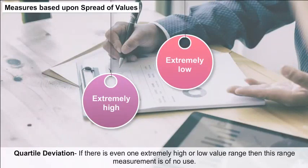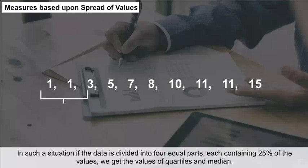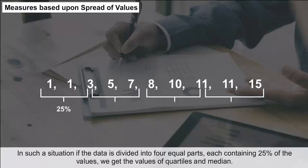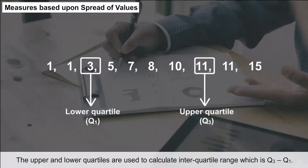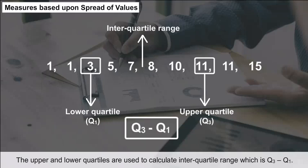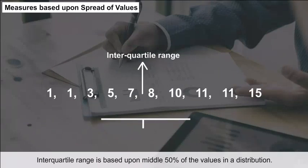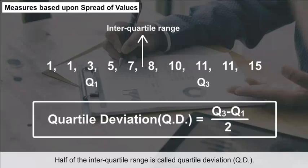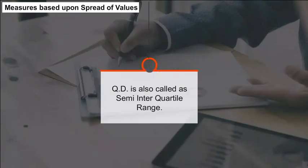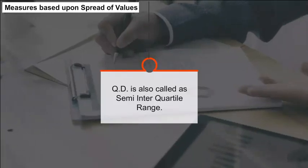Quartile Deviation: If there is even one extremely high or low value, the range measurement is of no use. In such a situation, if the data is divided into four equal parts each containing 25% of the values, we get the values of quartiles and median. The upper and lower quartiles are used to calculate the interquartile range, which is Q3 − Q1. Half of the interquartile range is called quartile deviation (QD), also known as the semi-interquartile range.